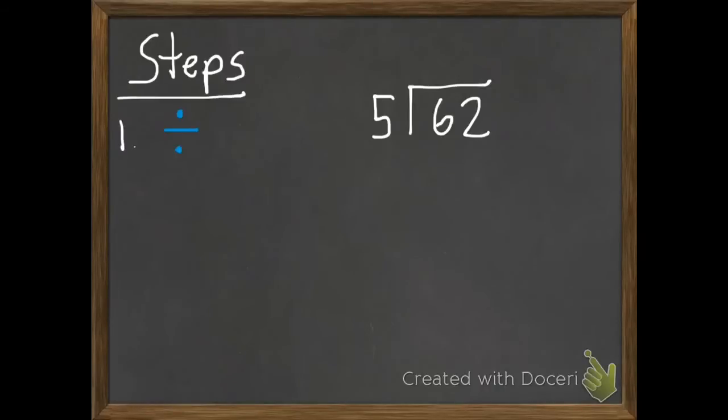So they are: first, divide; second, multiply; third, subtract; and fourth, bring down. If we have a number to bring down, then we need to start back at step number one again until there's nothing left to bring down.